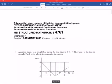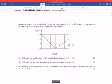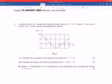Okay, so January 2006, M1, this is the very first one they ever did. Let's have a go at this. A particle travels in a straight line during the time interval 0 to 12, where t is the time in seconds. This is the velocity-time graph for the motion.